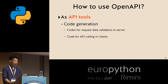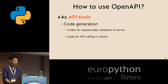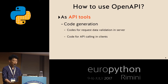Another way to use OpenAPI is with API tools — mainly code generators. For example, if you write an API spec, you can generate source code for validating request data from clients on the server side, or generate code for the API calling part on the client side.